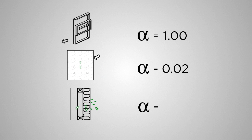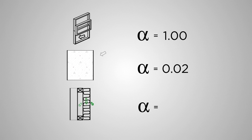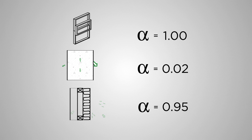When we apply fabric-wrapped glass fiber mounted on furring with an airspace behind it, the absorption coefficient is about 0.95 — that's about right, though that would be on the high end of the range.